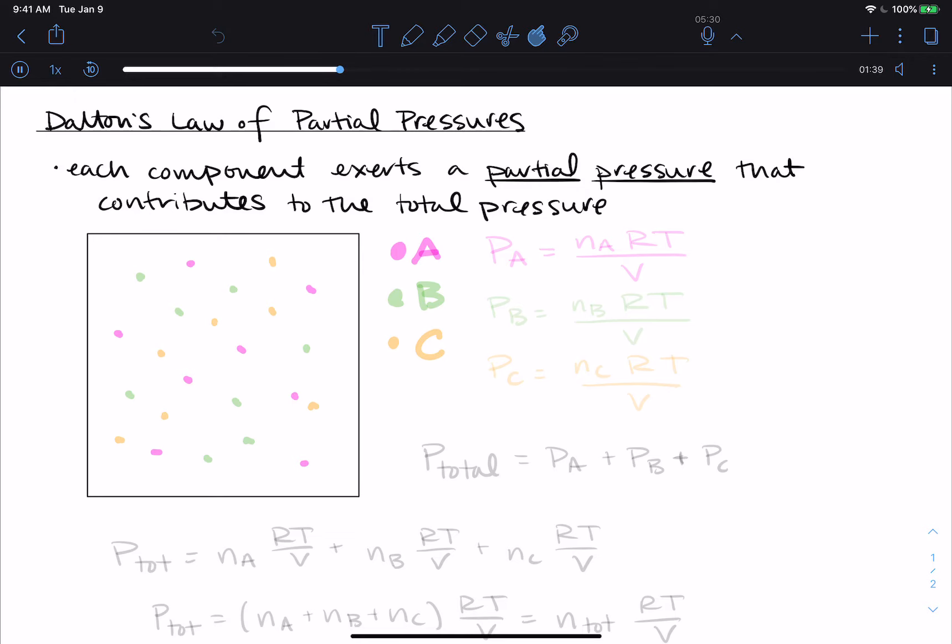So the pressure of gas A, let's also do this in a matching color, pressure of gas A is equal to the number of moles of A times R times T divided by V. So exactly the ideal gas law. And like with the problem that we solved in the previous video, just a little bit of rearranging this time to solve for pressure.